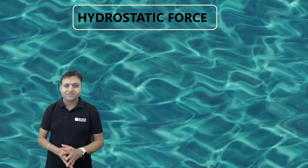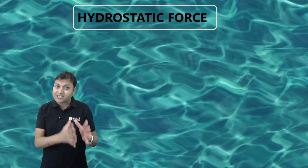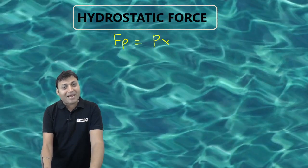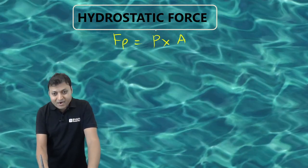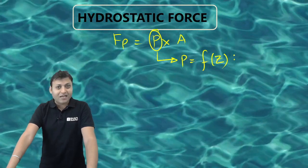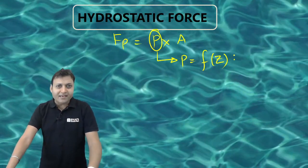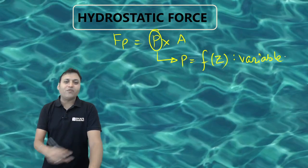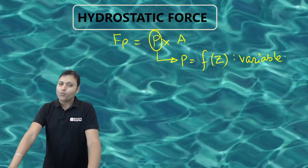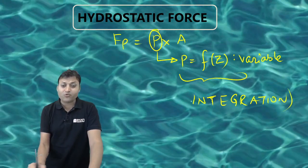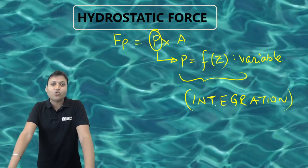Let us first try to understand what exactly is the hydrostatic force. The hydrostatic force is nothing but the pressure force which is exerted by the fluid in hydrostatic condition. The hydrostatic force is given by pressure multiplied by area of the surface. But the problem is pressure is varying in the vertical direction according to hydrostatic law. For a static fluid, the variation of pressure in the vertical direction is linear for incompressible fluid — that is the hydrostatic law. So we can say pressure is a variable parameter, and we cannot directly find out the value of hydrostatic force. What we need to do is go for integration — we have to integrate to determine the magnitude of the total hydrostatic force.